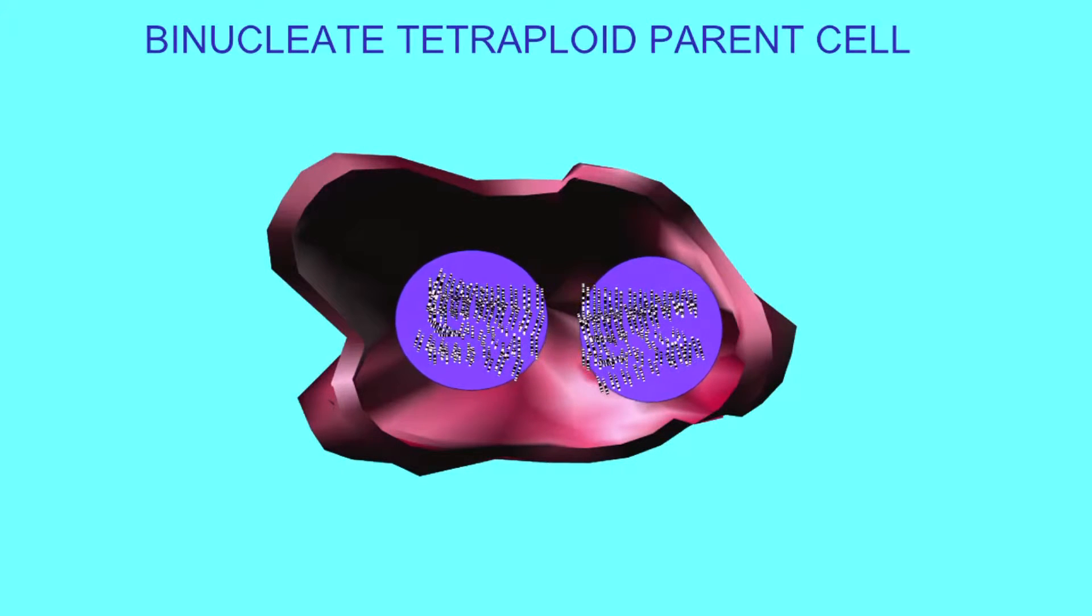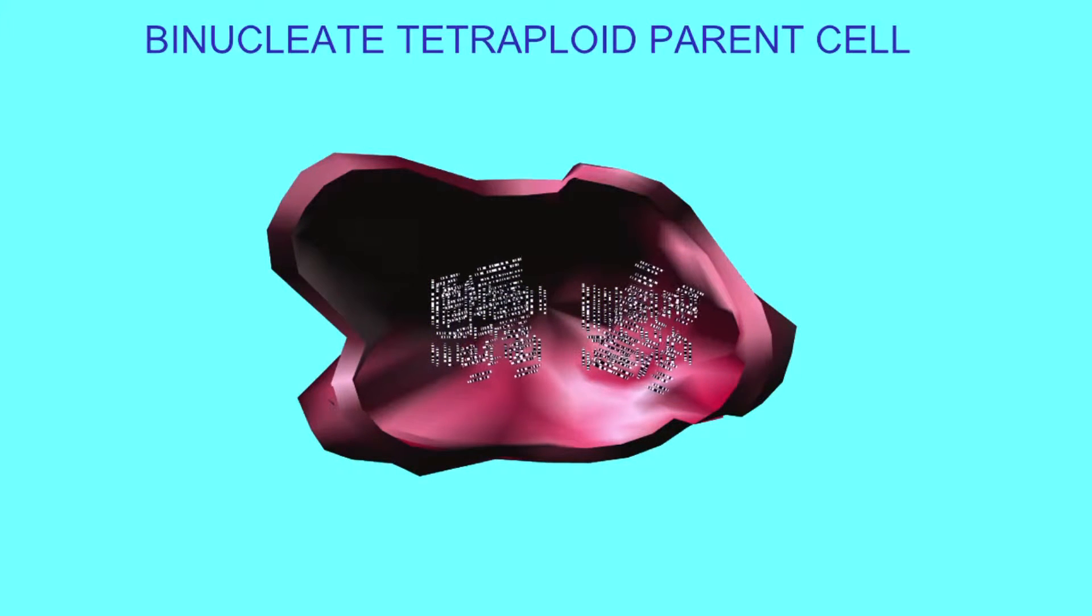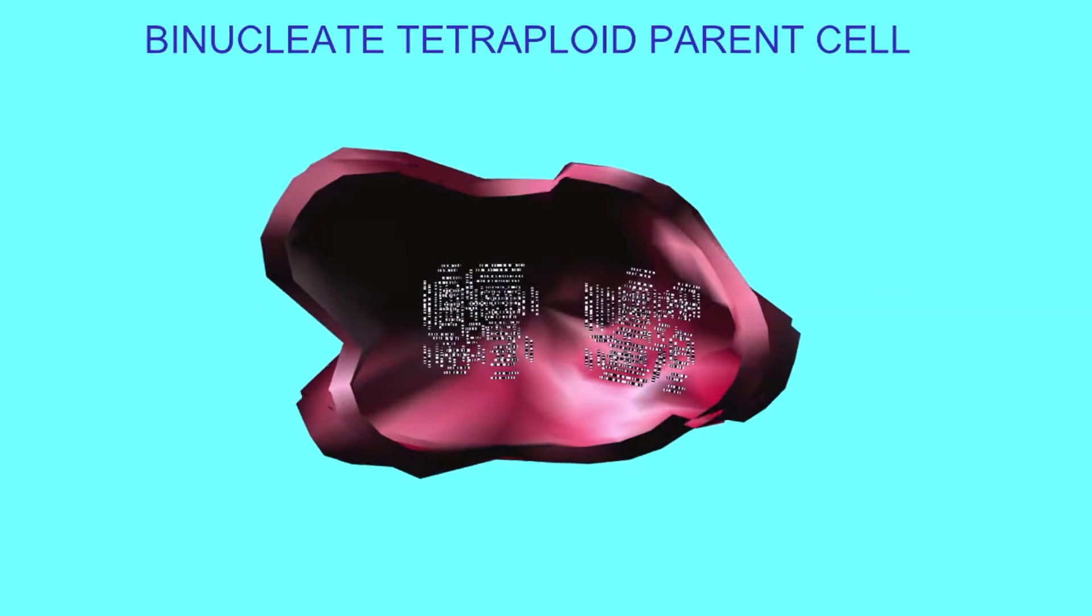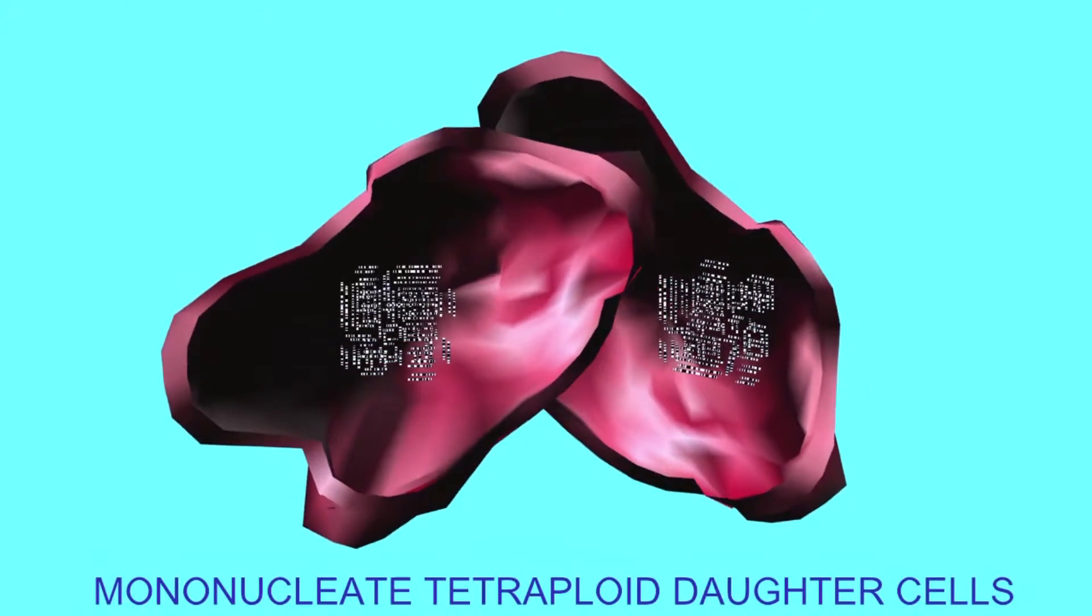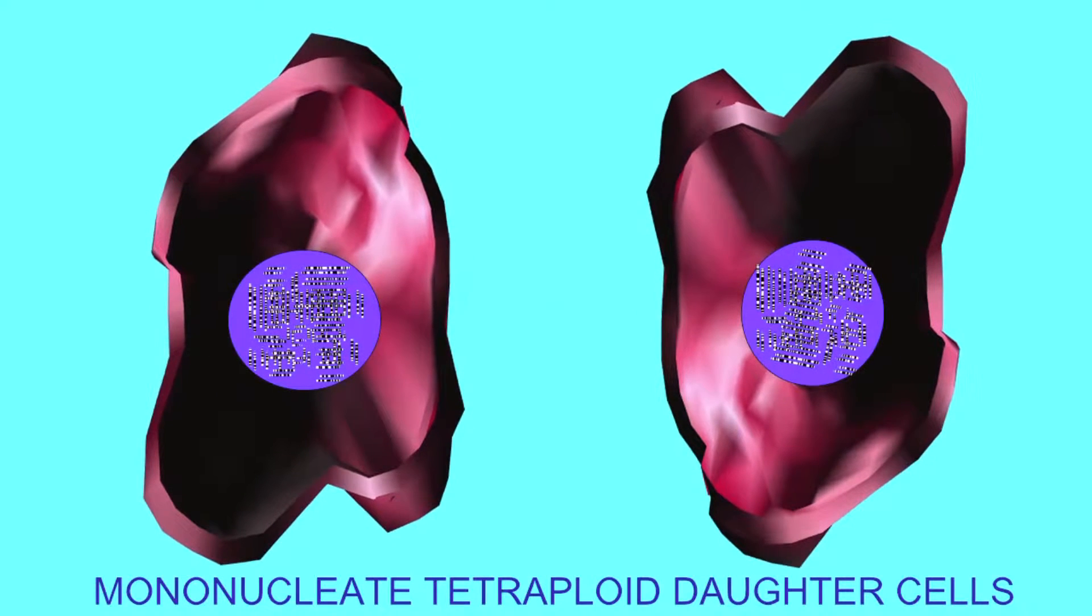A tetraploid binucleate hepatocyte can undergo cell division and produce daughter cells, each of which are tetraploid, however, which are mononucleate.